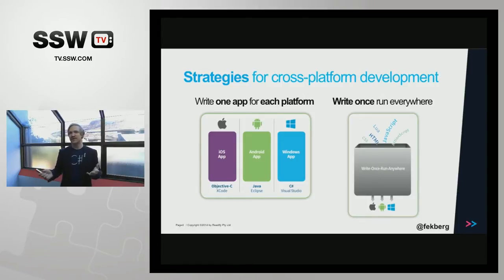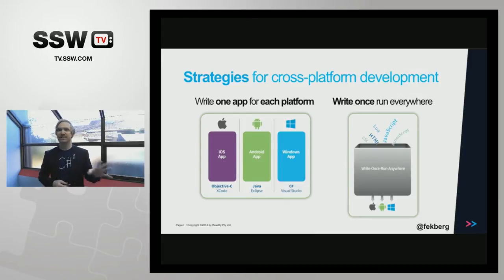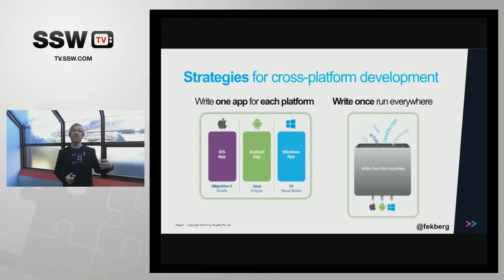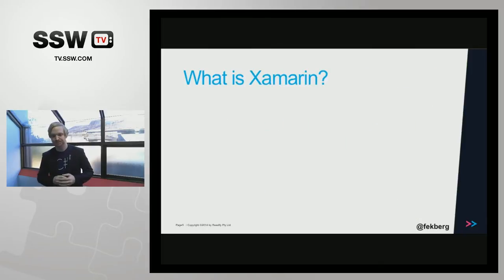We cut down development cost compared to creating one application per platform by about two times, but they didn't get what they expected. The benefit of going with native applications is that we get native performance — the application runs on the native device, it's native code, everything runs nicely. But the downside is that it's going to cost a lot more. So Xamarin solves this.